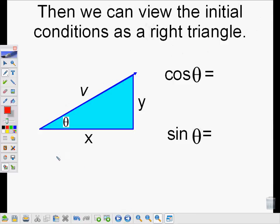Then we can view the initial conditions of this motion as a right triangle with these components. We have an angle. We have the magnitude of the motion. How fast is it going? And we have the horizontal measurement of that magnitude and the vertical component of that magnitude.